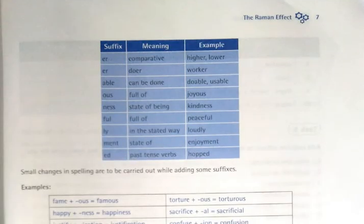Here we have a table with suffixes and their meaning. Er means comparative, we use it while we compare, and er also means the doer, worker, driver, etc. Able means can be done, doable, usable. Ous means full of, joyous, famous.